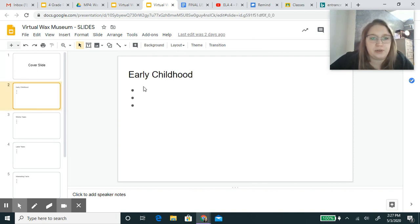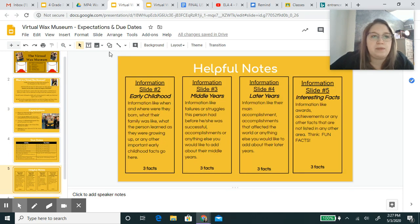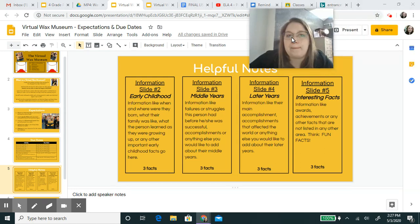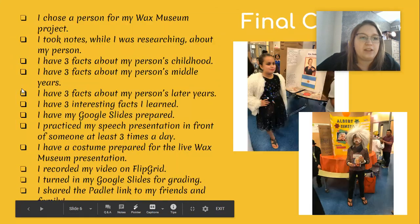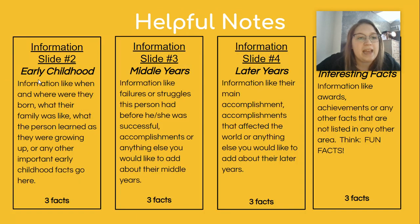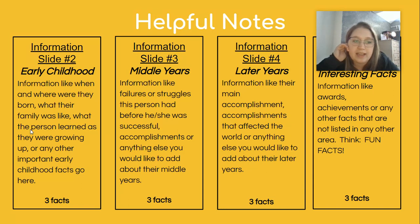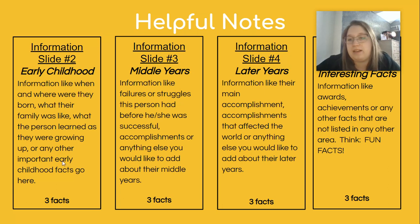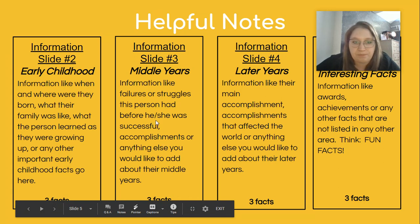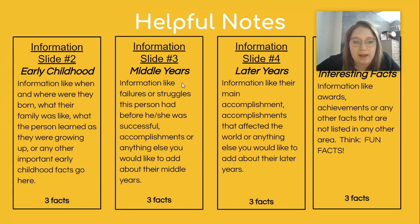Slide number two is early childhood. I've put three bullet points already for you. Early childhood covers information like when and where they were born, what was their family like, what did the person learn as they were growing up, or any other important early childhood facts. There have to be three facts — not two, not five — three. If you really want to put one more, I'm okay with that, but it needs to be a minimum of three.